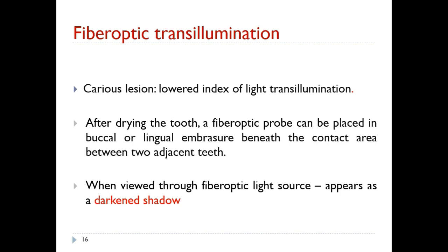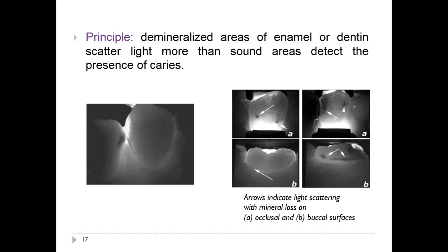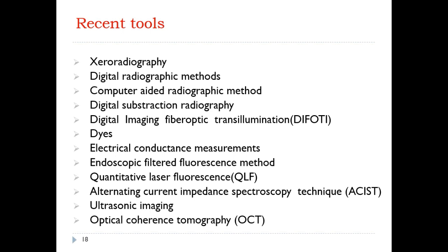Fiber optic transillumination (FOTI): in caries lesions there is a lowered index of light transillumination. After drying the tooth, a fiber optic probe is placed in the buccal or lingual embrasure beneath the contact area between adjacent teeth. When viewed through the fiber optic light source, caries appears as a darkened shadow. The principle is that demineralized areas of enamel or dentine scatter light more than normal sound areas.